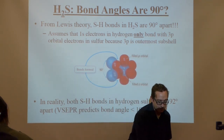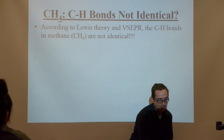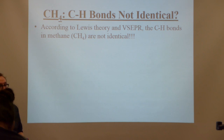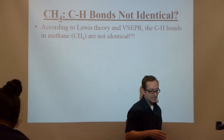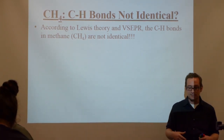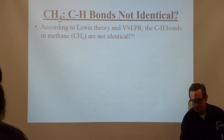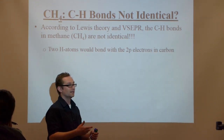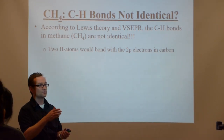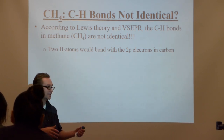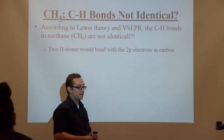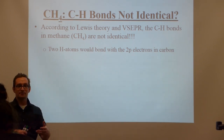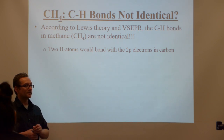Here's another — even better — example. Check out methane. With Lewis and VSEPR theory, it would assume that the C bonds of methane are not identical. For example, carbon's electron configuration is 2s², 2p² for its valence shell. If carbon is going to make four bonds, which orbitals is it bonding with — its P orbitals or its S orbitals?